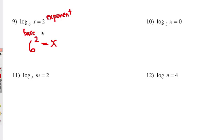6 squared equals x. We know what 6 squared is, that's 36. So we have solved for x. It's simply a matter of writing it in exponential form, and we should get 36.